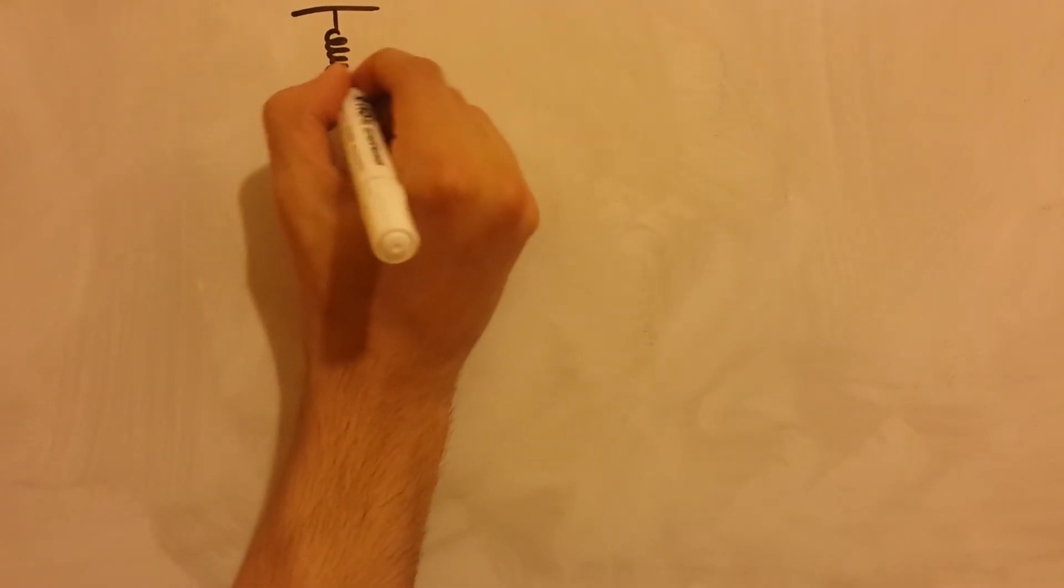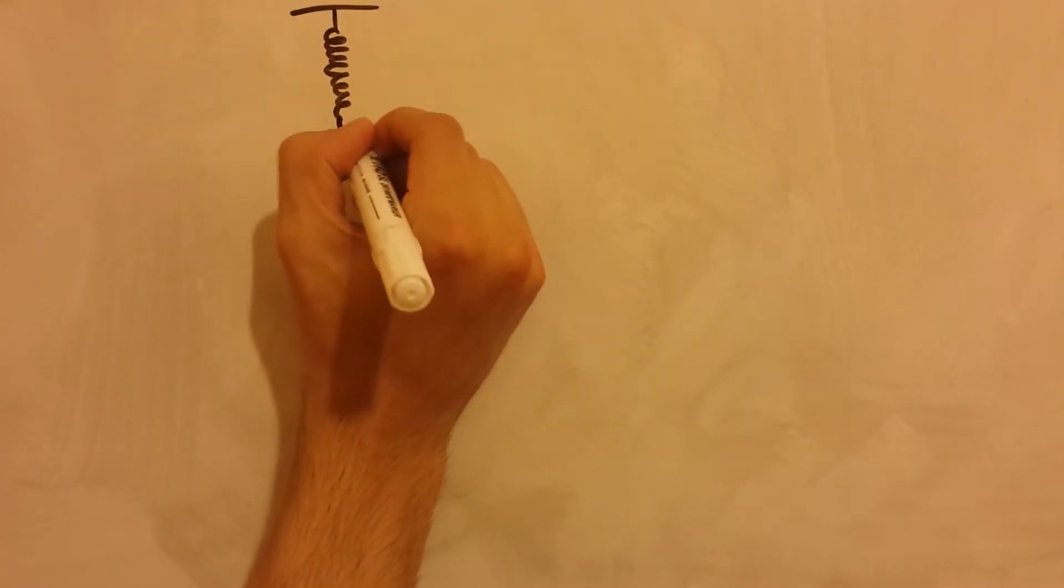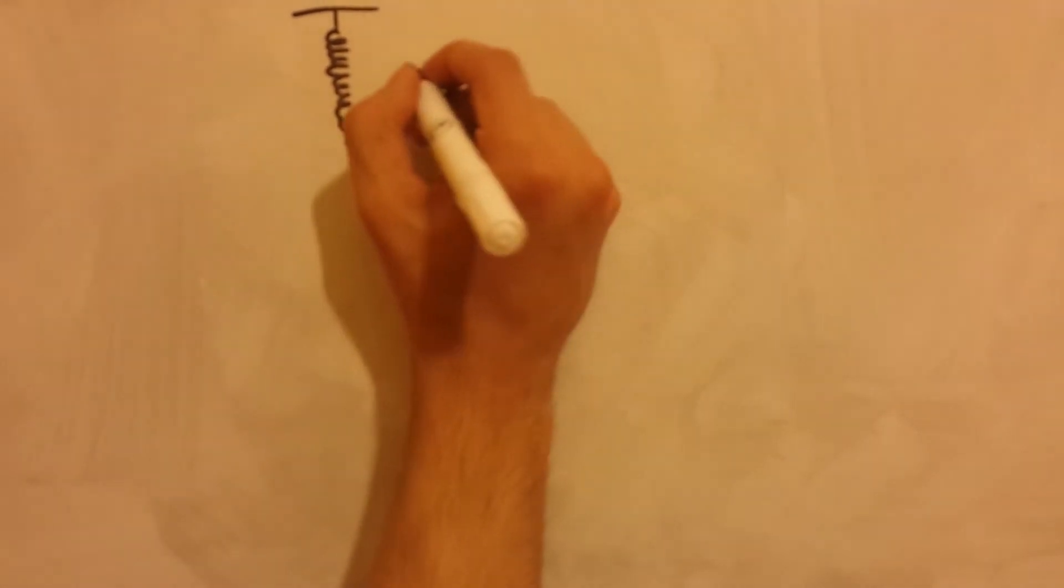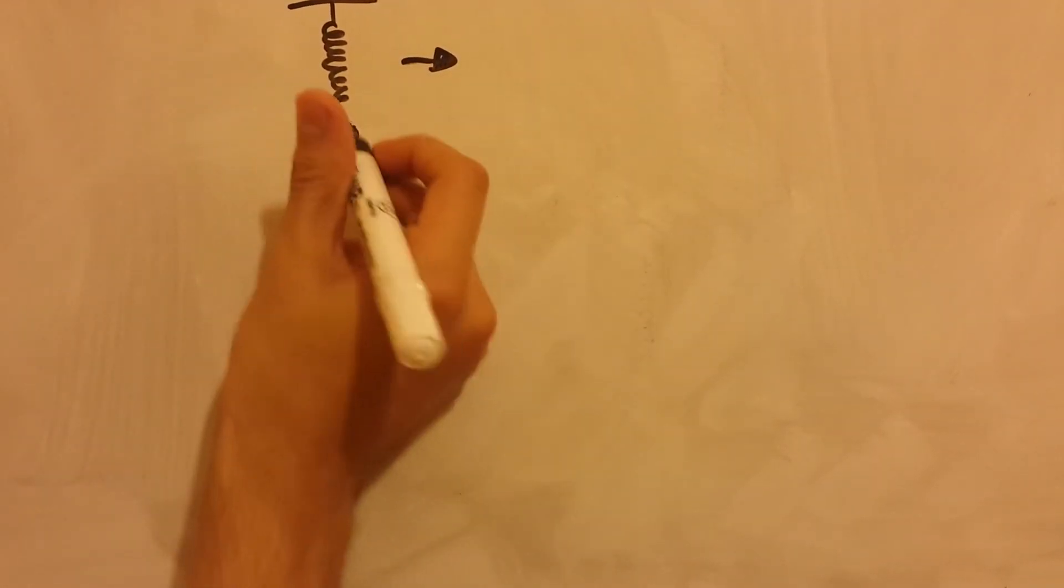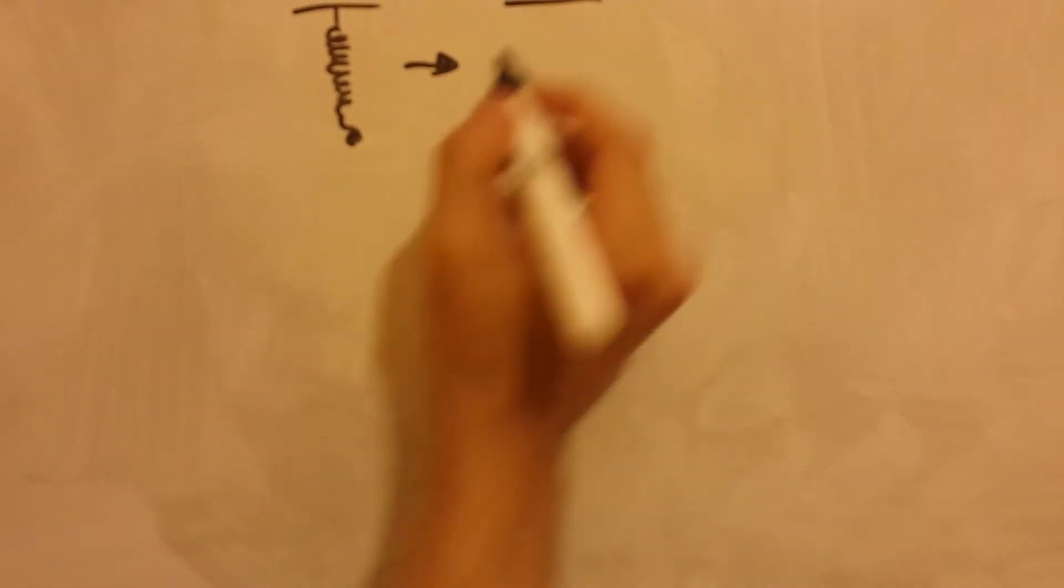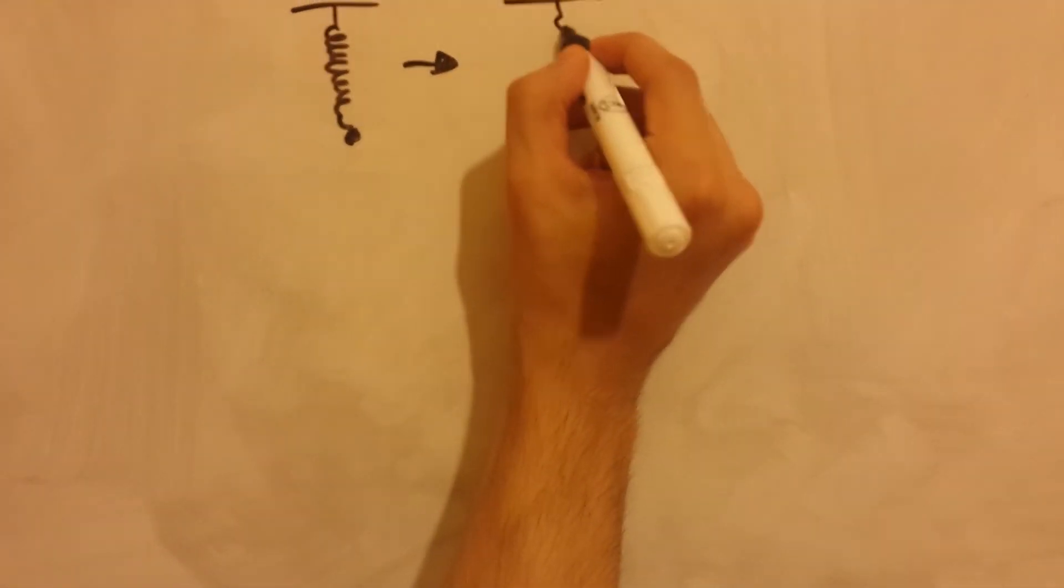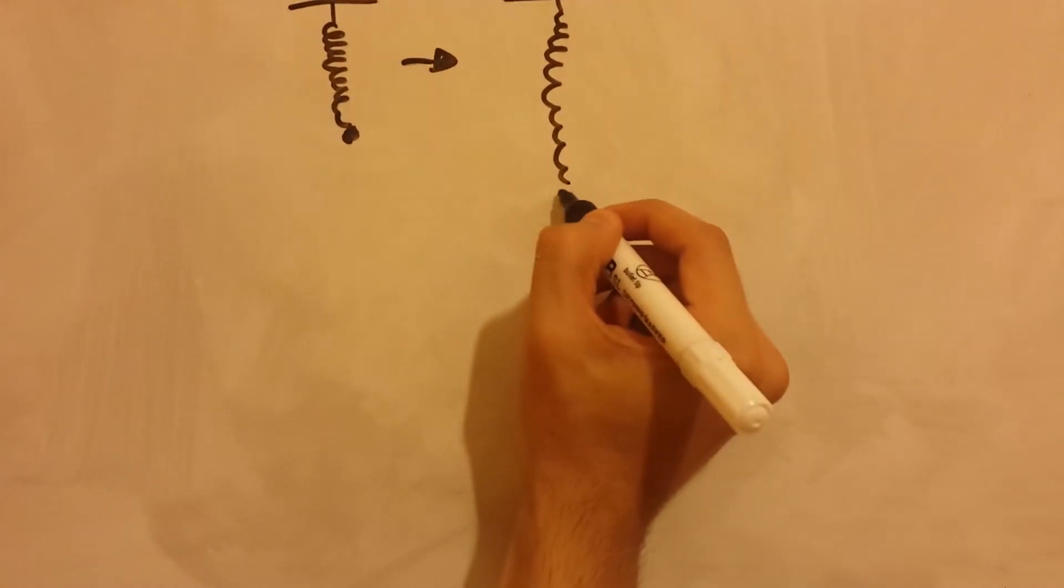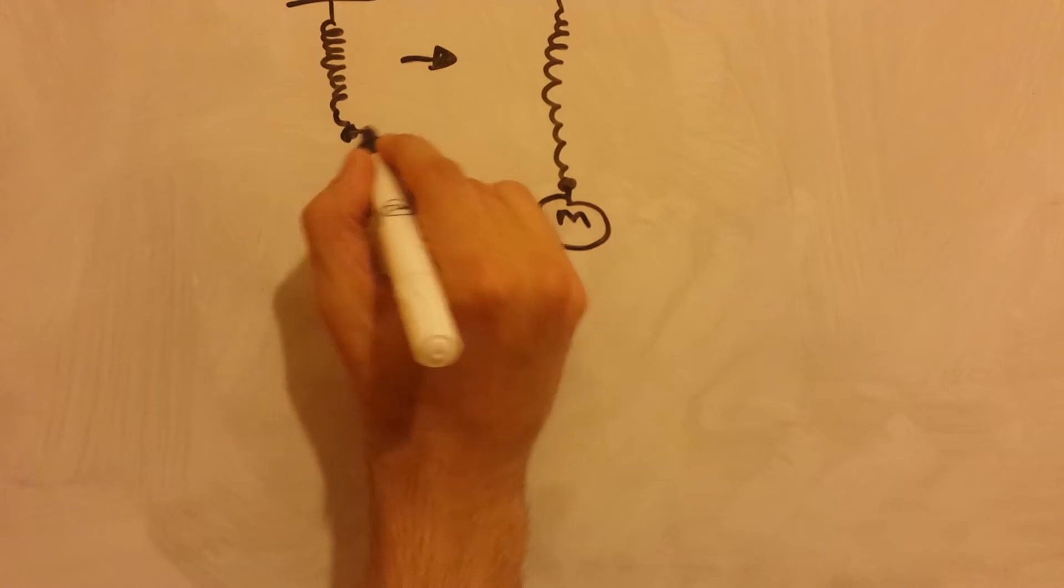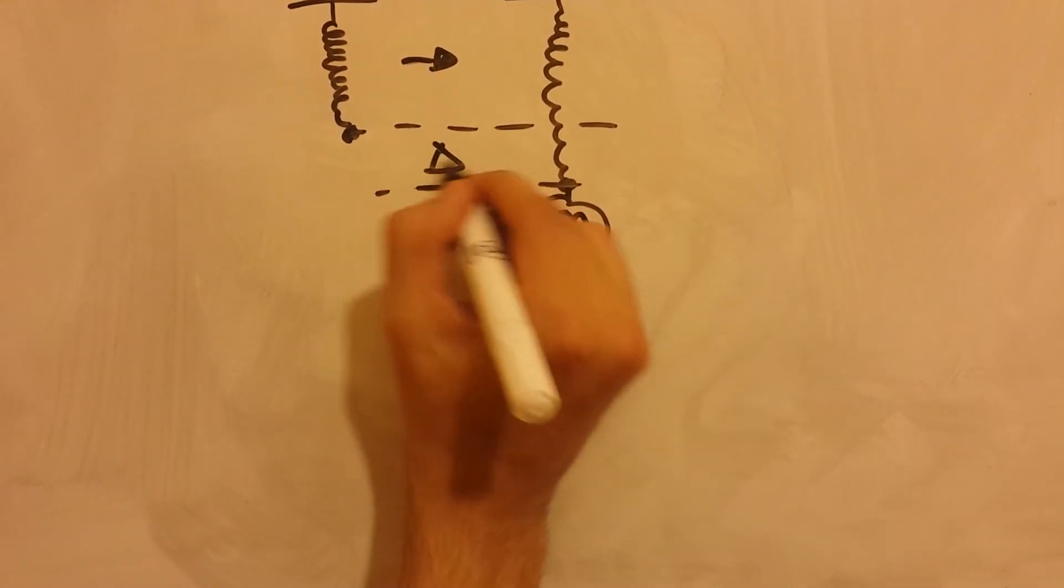So let's begin. Here we have a spring, it's hanging and it's not attached to anything, nothing's attached to it. Then let's say we get a mass and attach to this spring, and common sense will tell us that the spring will extend. And let's say it extends by an amount of infinitesimal of L.